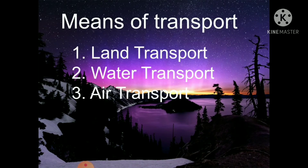Different means of transport are required to carry both people and goods. The type of transport we use depends upon the place we live in. When we have to go a short distance from home, we use a cycle, bike or a car. If the place is very far from our home, we use a train or an aeroplane. The kind of transport we choose depends upon the distance to be travelled and the time we can spend. In villages, people travel by bullock carts, tempos and tongas. In deserts, people use camels and horses.